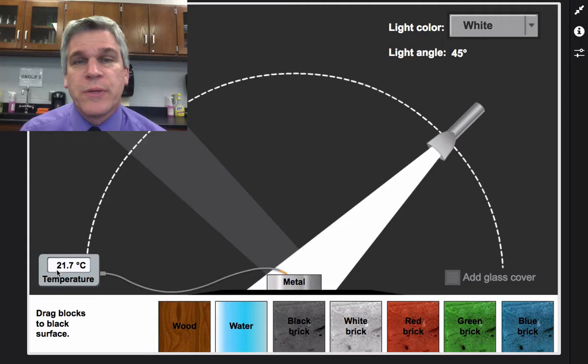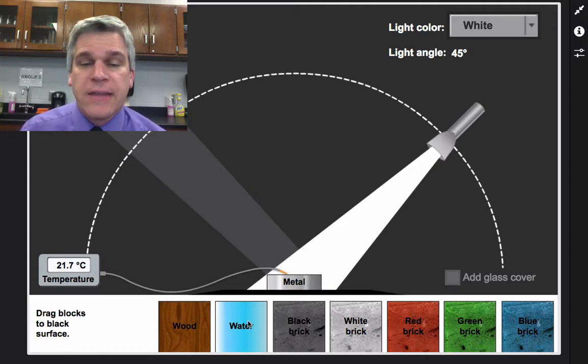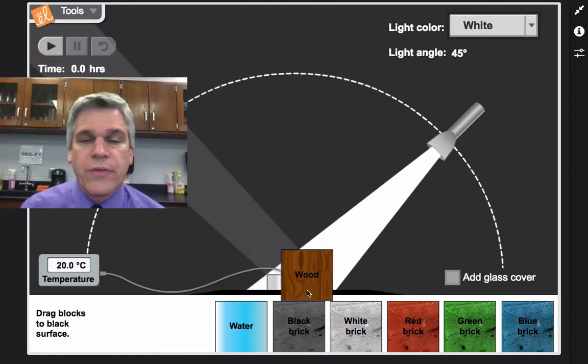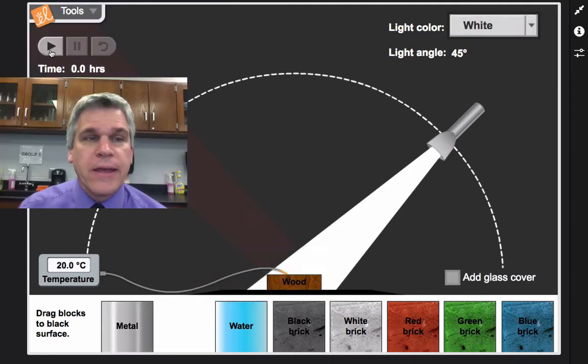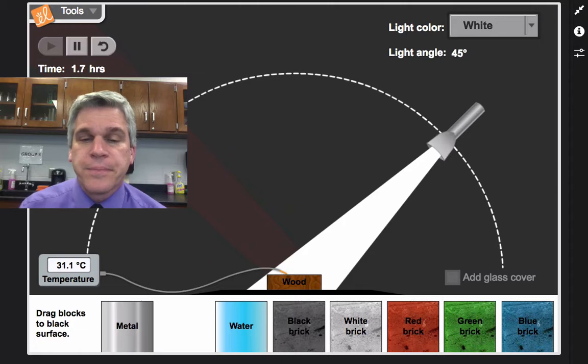Remember, the temperature is going to be my dependent variable. That's what I am measuring. I can then substitute the metal with a block of wood and repeat this.